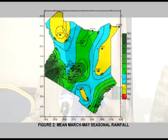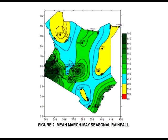March to May constitutes a major rainfall season in most parts of Kenya, as well as much of the equatorial eastern African region. A map showing the average March to May rainfall indicates that the highest rainfall amounts — over 300 millimeters — are normally recorded over western parts and central Kenya, the central highlands, the coastal strip, and parts of northern Kenya, especially Marsabit-Mandera.